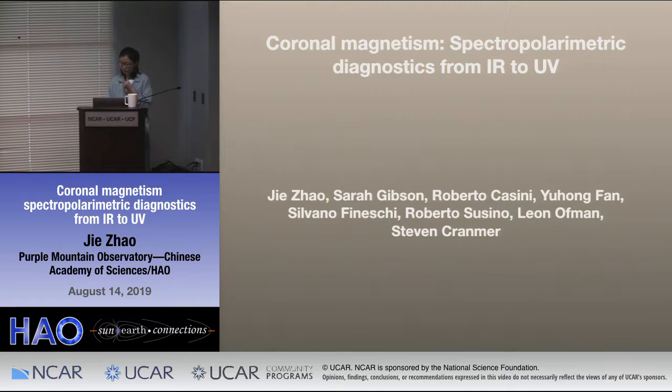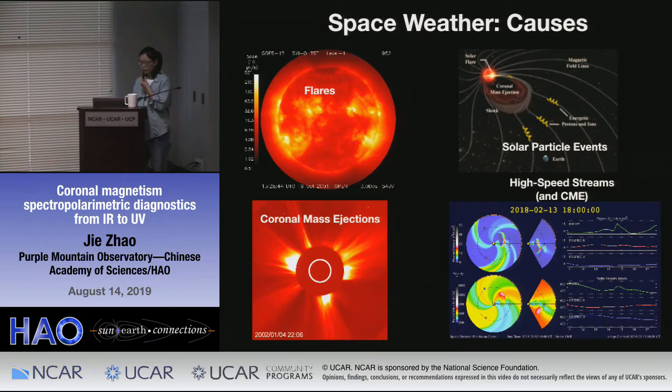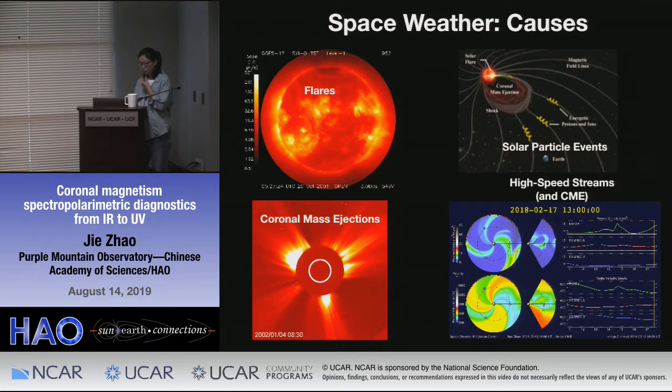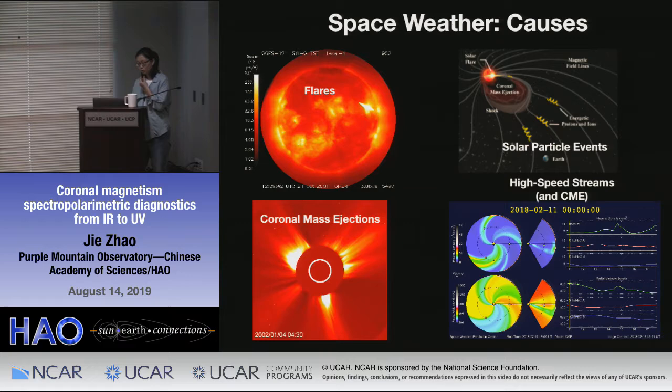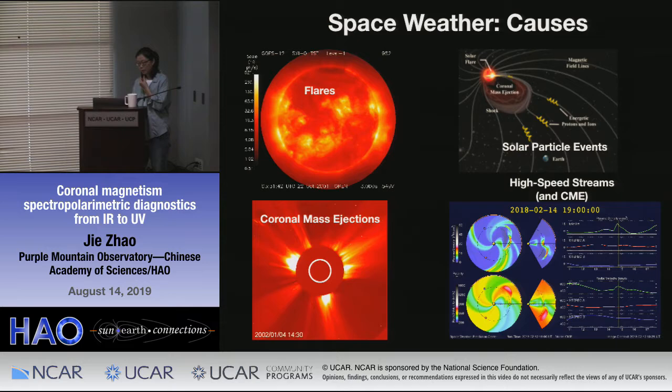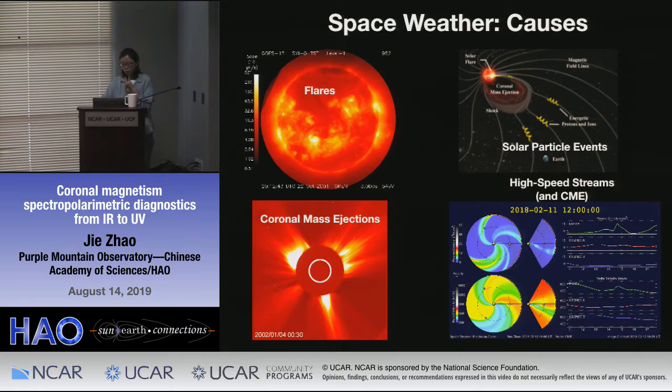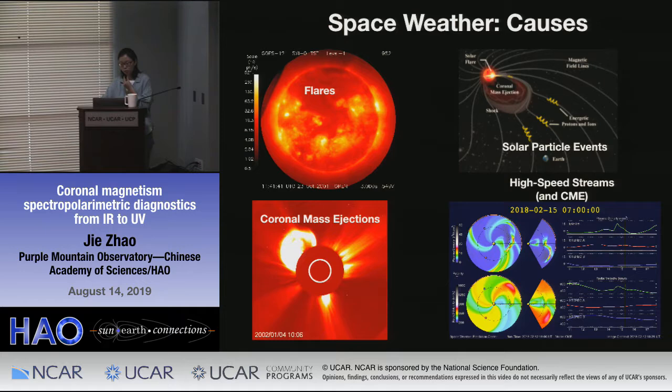As we all know, solar eruptions such as flares and the associated solar particle events, and also the coronal mass ejections, are the main cause of space weather. High speed streams such as the fast solar wind can also cause geomagnetic storms on the Earth. So to understand and predict these phenomena, it is very important to measure the coronal magnetic field.